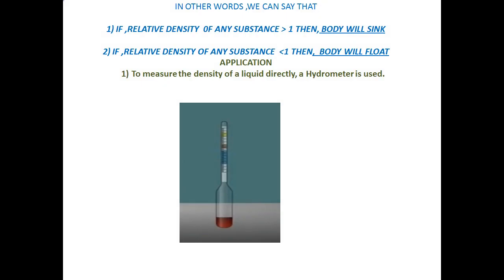In other words, we can say that if the relative density of any substance is greater than 1, then the body will sink, and if the relative density is less than 1, then the body will float. To understand this, take the example of iron, water, and mercury. If I write: relative density of iron = density of iron divided by density of water, the denominator is less than the numerator, so the value will be more than 1, and therefore iron will sink.